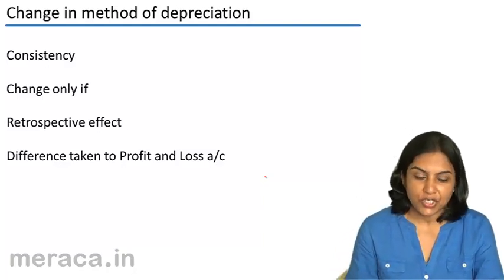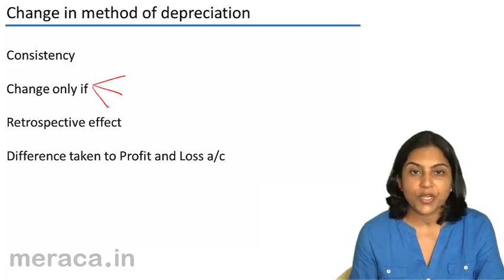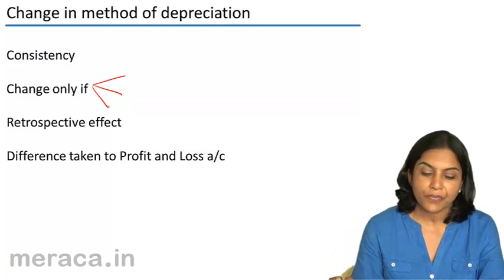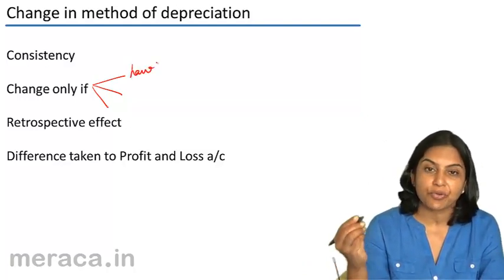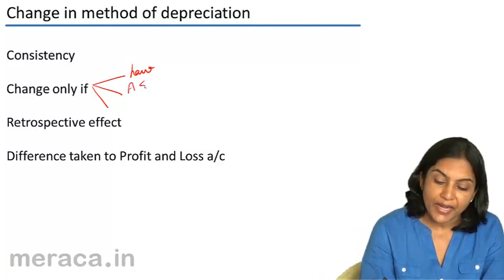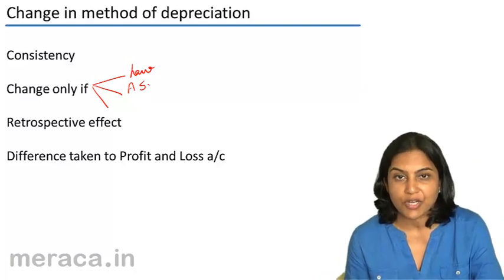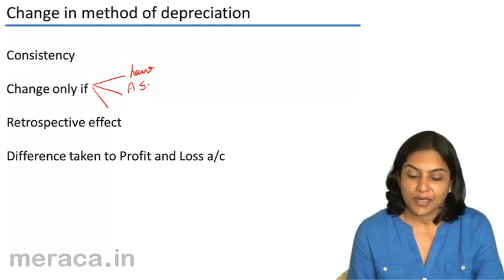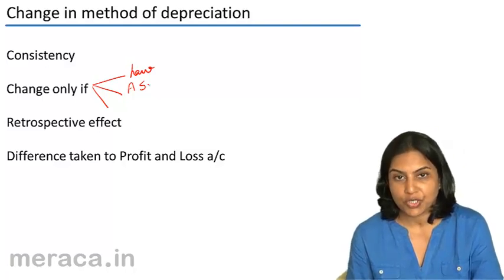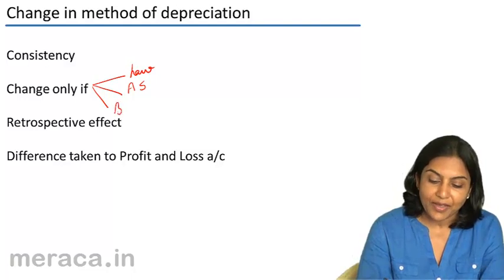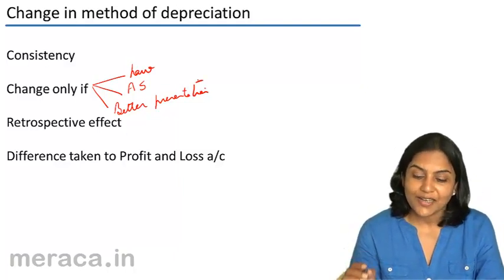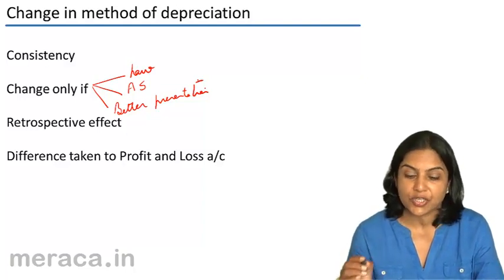However, we may change under three circumstances. We could move from straight line method to written down value or vice versa: first, if it is required by law statutorily; second, if it is required by any other accounting standard or new regulation; or third, if we think that it will result in a better presentation of the financial statements. These are the three circumstances under which we can go ahead and change the method of depreciation.